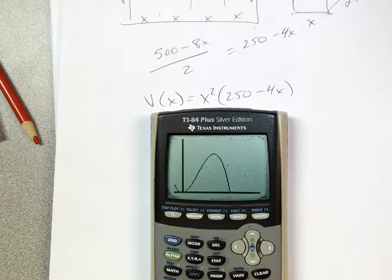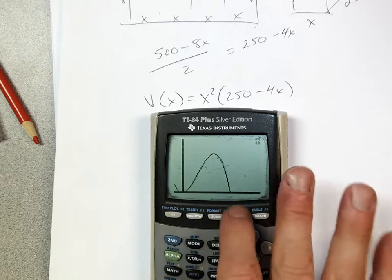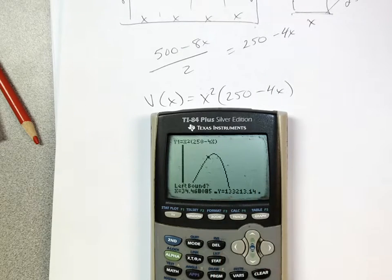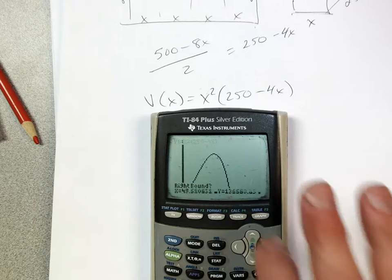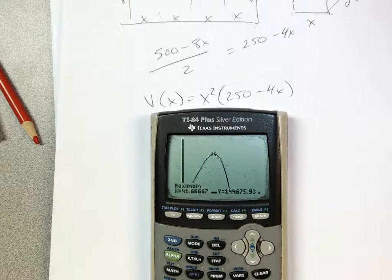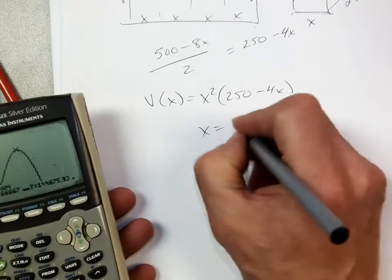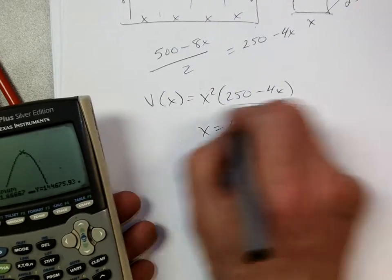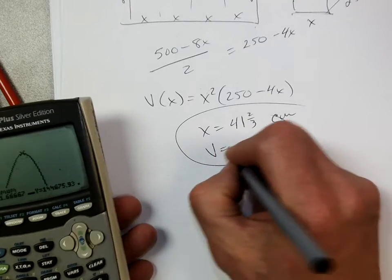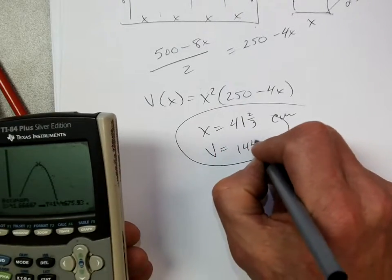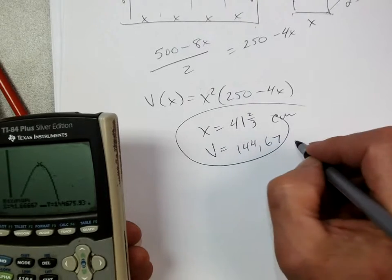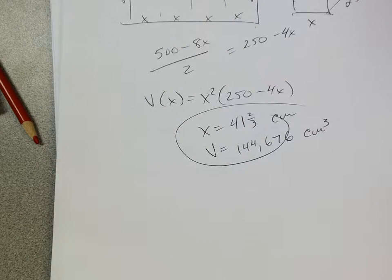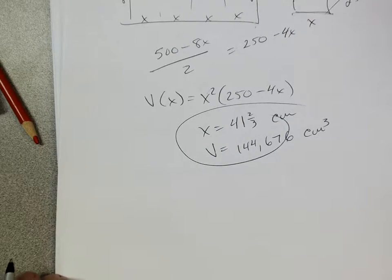Calculate maximum. Left bound. Enter. Right bound. Enter. Solve. And I'm going to get an answer. 41.666, or x is about 41 and two-thirds, and that's in terms of centimeters. The volume, because that's the y. The volume is 144,676 centimeters cubed.